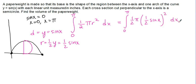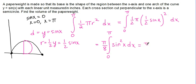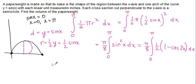Plugging that in, we end up with an integral from 0 to pi of one half pi times (one half sine X) squared DX. Pulling all the constants out, one half squared is one fourth, times the one half, times pi gives a constant of pi over 8, times the integral from 0 to pi of sine squared X DX. In order to integrate sine squared X, we're going to use the power reducing formula: sine squared X equals one half of (1 minus cosine 2X). That one half can come out, giving us pi over 16 times the integral of (1 minus cosine 2X).